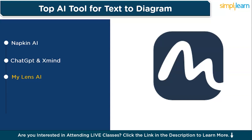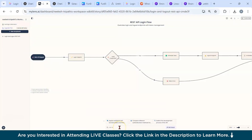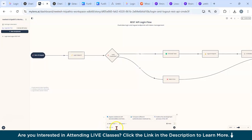MyLensAI is perfect for professionals who need high-quality diagrams for technical documentation, software architecture, or system design. It also supports exporting to multiple visual formats, making it easy to integrate visuals into presentations or reports. Pricing: MyLensAI offers a free version with basic functionalities; the premium version includes additional customization options and export formats starting at $15 per month.